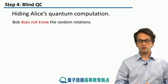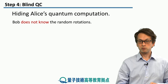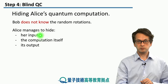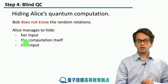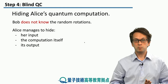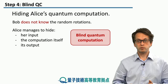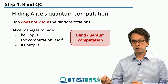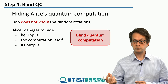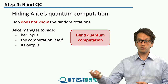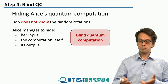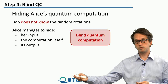In this way, Bob does not know the random rotations because those are kept secret by Alice. This prevents him from learning anything about the input, anything about the computation itself, and anything about the output. He's basically doing this computation blind — performing operations according to Alice's instructions, but because he doesn't know the initial states of the qubits, he doesn't know what these operations mean and cannot interpret them. Whatever output he gets, he just returns it to Alice.